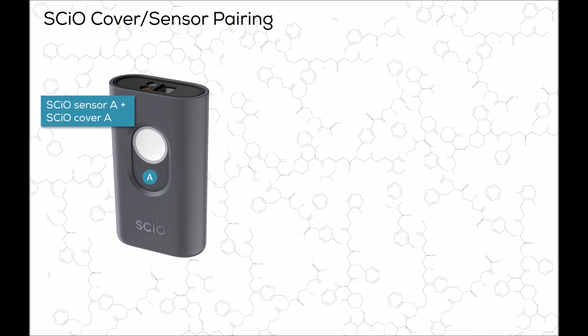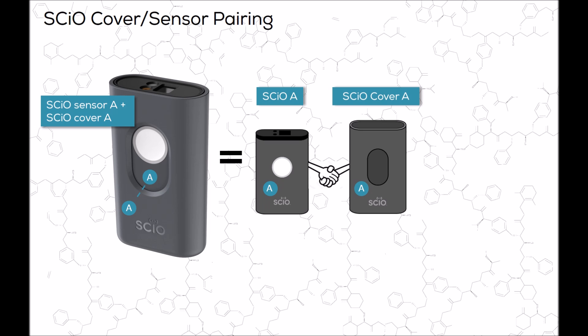Your SCiO Sensor and SCiO Cover are customized and paired. Should you meet another SCiO, make sure to keep your SCiO Cover and your SCiO Sensor separate. They cannot be interchanged with another SCiO. Doing so will result in poor scans and results.